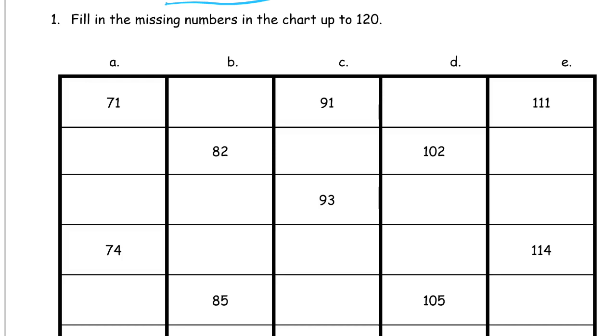And you can see as we go across we have 71, 91, 111. It looks like we're going across by tens. So 71, 81, 91. This would be 101. And then 10 more is 111.